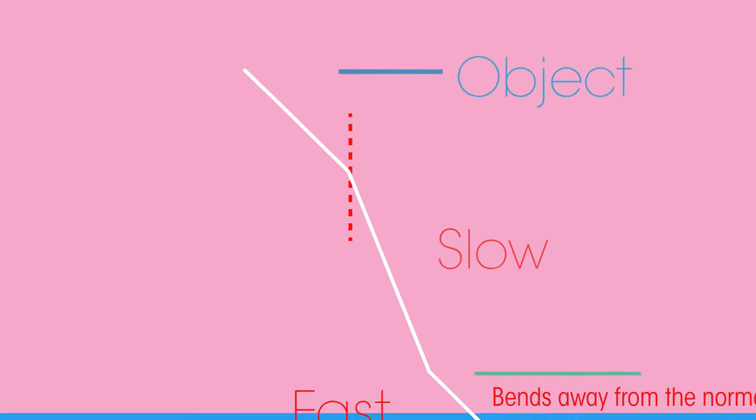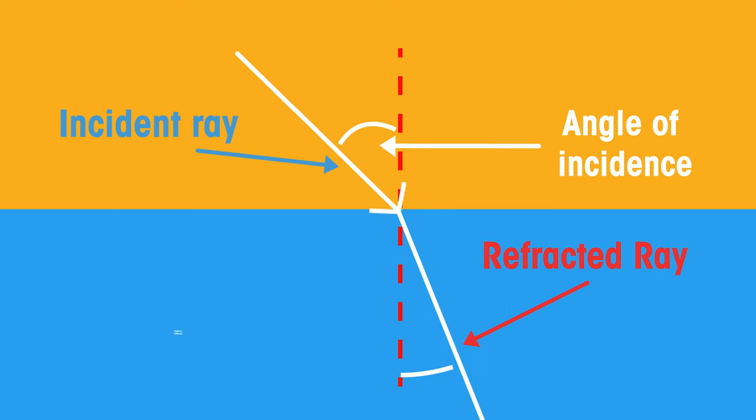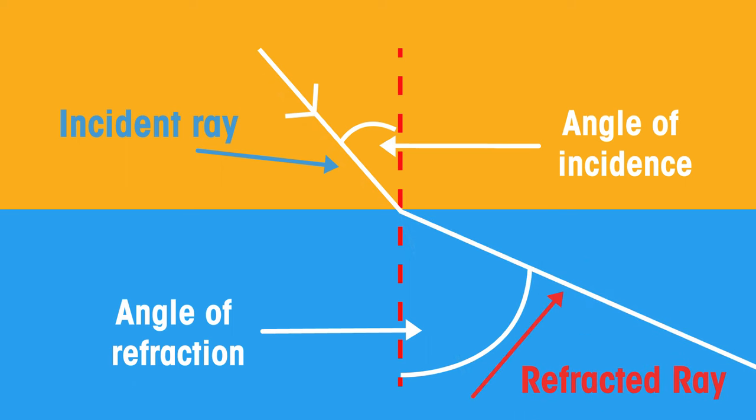Just like with reflection, refraction also has an angle of incidence and then has an angle of refraction. In refraction the two angles do not equal one another because they are traveling through different medium. The greater the change in speed the greater the angle of refraction.